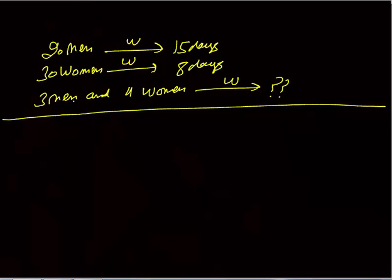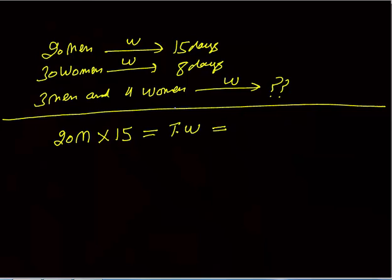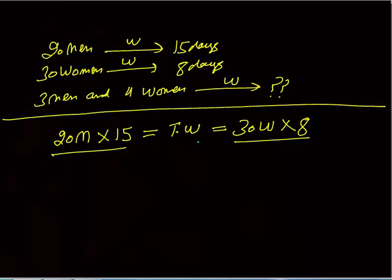We will first calculate total work. Twenty men one day work is twenty m. In fifteen days they will do twenty m into fifteen units of work — this equals total work. The same work is done by thirty women: thirty women one day work is thirty w, and in eight days they will do thirty w into eight units of work. This is also equal to total work.